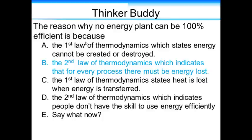The correct answer is B, the second law of thermodynamics, and actually the third one as well. But the second law essentially indicates that for every process, there must be energy lost. The first law just has to do with energy not appearing. It has to come from somewhere. And for D, it's not that we don't have the skill, it's a fundamental law of the universe. It's essentially impossible.